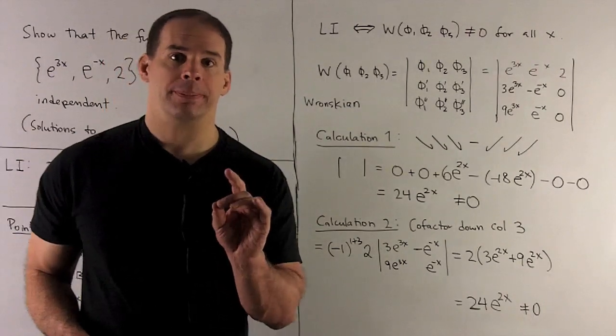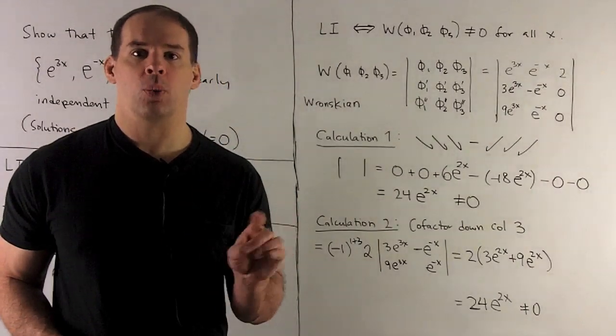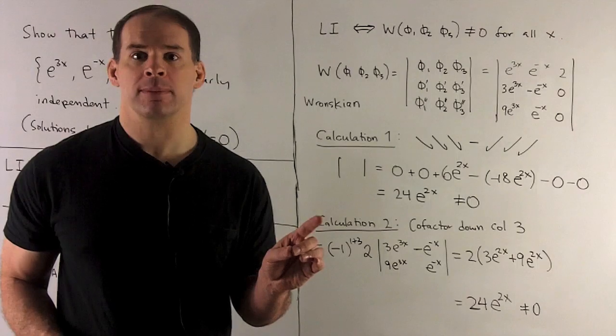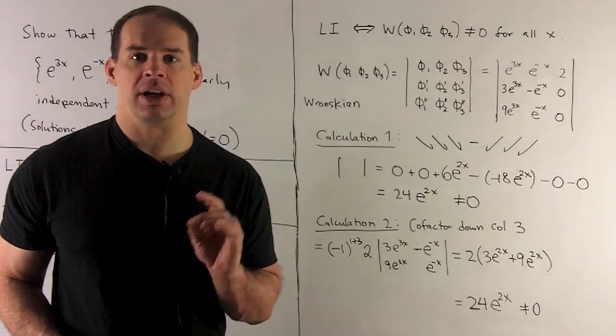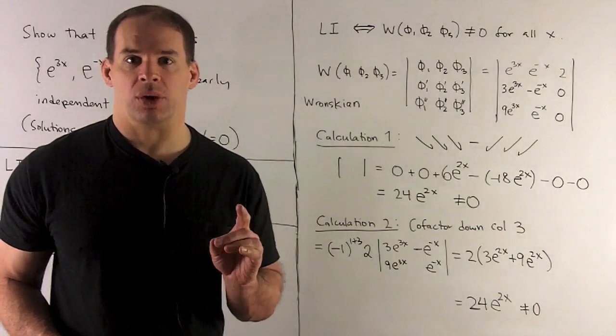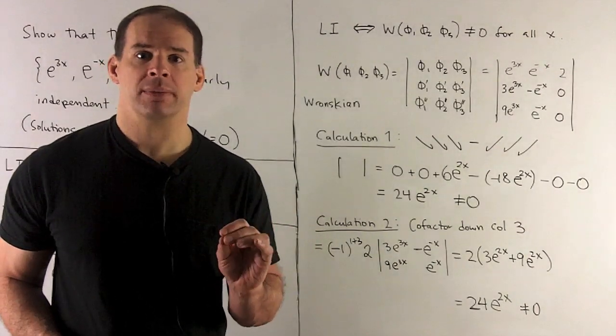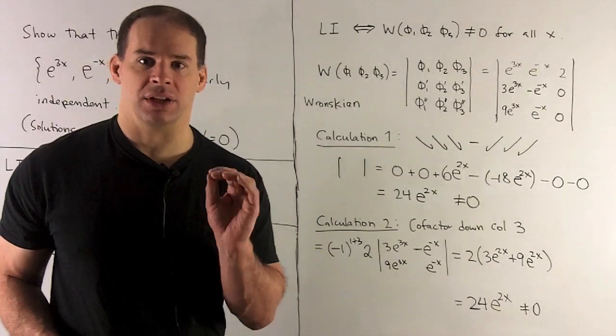We check our theorem. The condition is, if your Wronskian is non-zero where your solution space is defined, then you're linearly independent. In this case, we have 24e^(2x). e to any number is non-zero. In fact, it's always positive. So here, the condition of the theorem is satisfied, and my set is linearly independent.